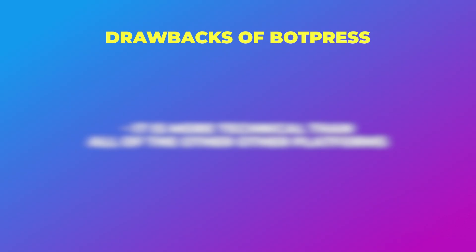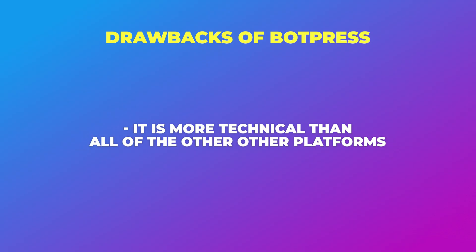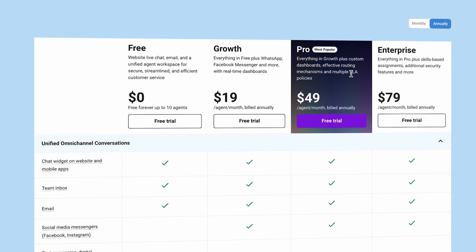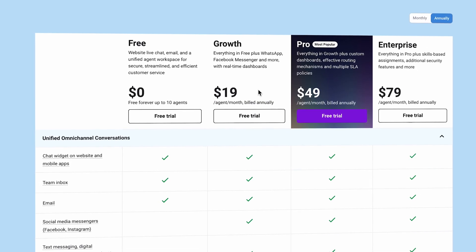The main drawback of Botpress is that it is a very technical platform — the most technical of all the platforms mentioned in this video — so it's less beginner-friendly. And that brings us to our next platform, which is FreshChat. FreshChat is actually not ideal for creating DM automations, but it's a very affordable solution for large customer support teams because you only need to pay $19 per agent per month.